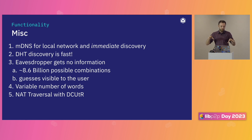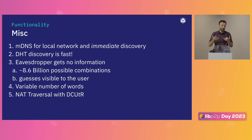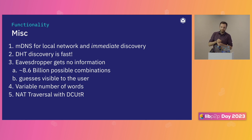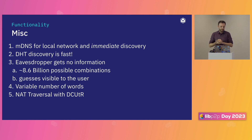Eavesdroppers on this connection get no information. With three words there are 8.6 billion possible combinations, and every guess is visible to the user, so the security aspect is fine. You can always extend the number of words generated starting from four. NAT traversal itself uses DCUTR, and as we found out last year, if both routers support hole punching the success rate is very high. In general, the likelihood that you have a router that supports hole punching is around 70%.